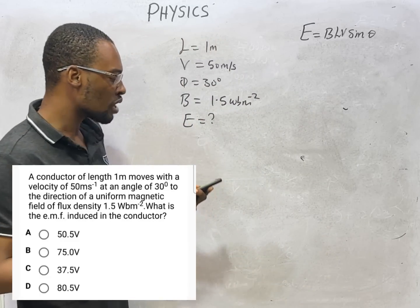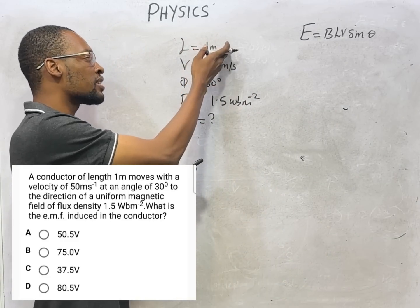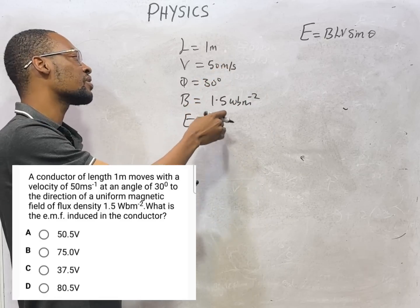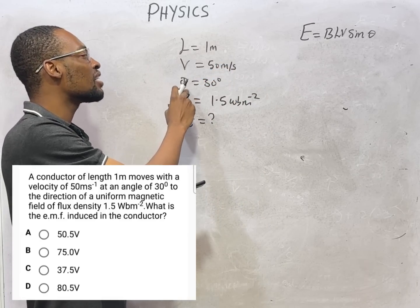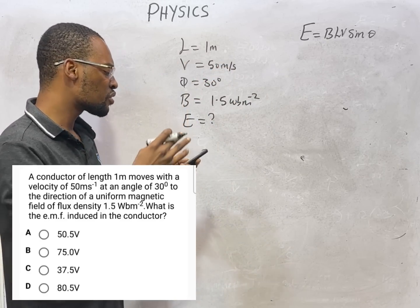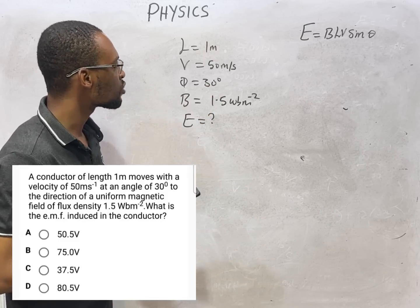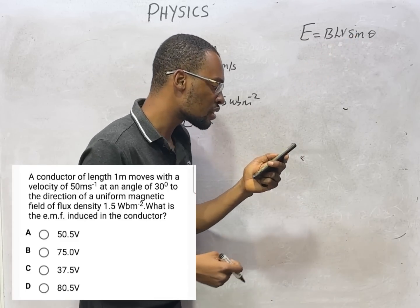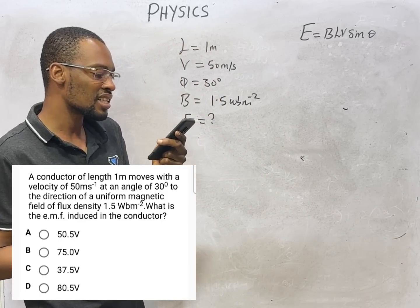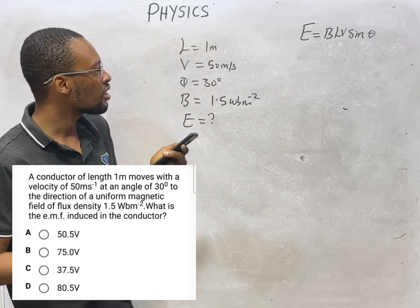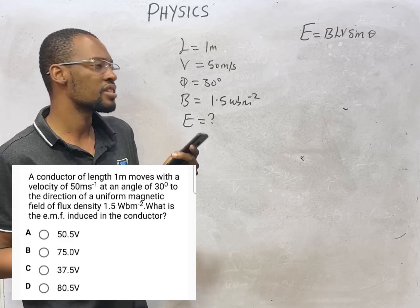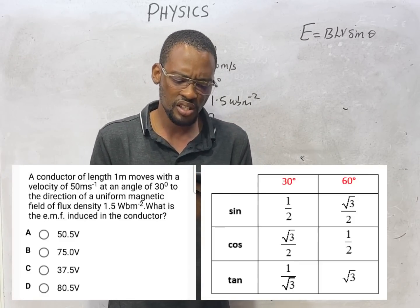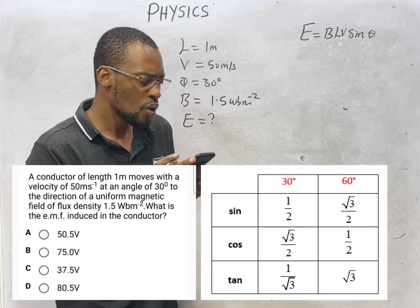So you have your B to be 1.5, you have your length to be 1 meter—if it were in centimeters you convert back to meters. You have your velocity to be 50 meters per second, you have your angle θ to be 30 degrees. So once you multiply everything: 1.5 times 1 times 50 times sin 30 degrees, you are going to get 37.5 volts. It is as simple as ABC. Sin 30 degrees is 0.5, that is one over two—these are special angles. So option C is the correct option.